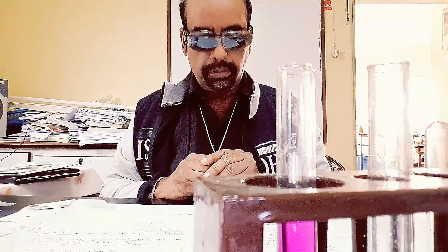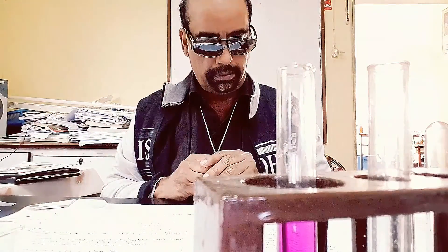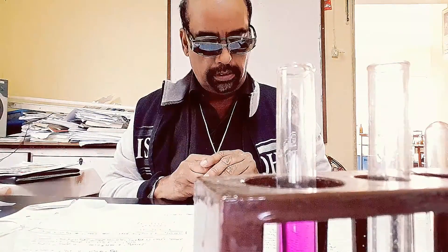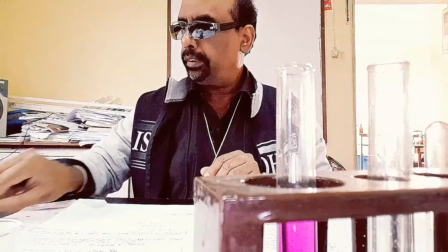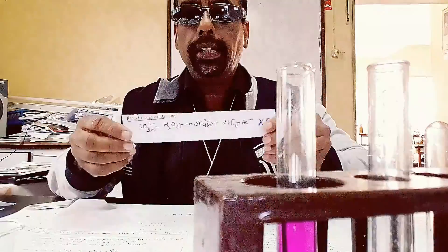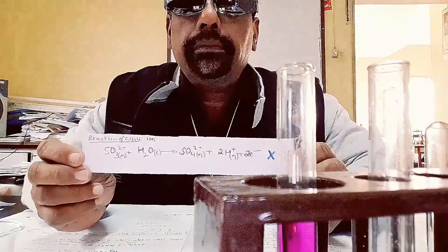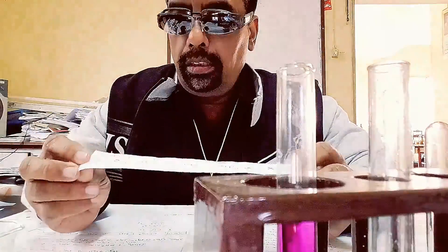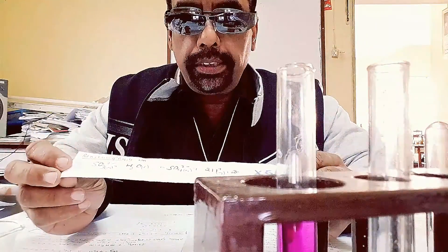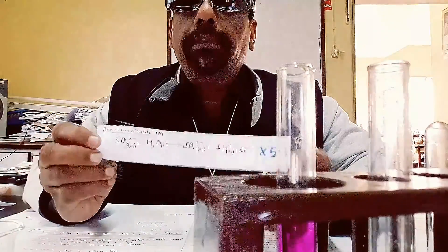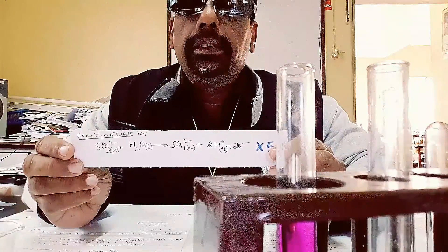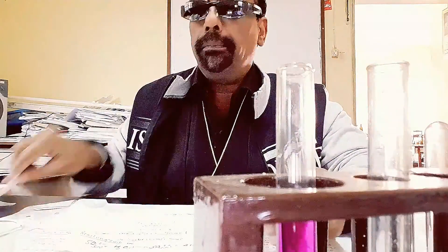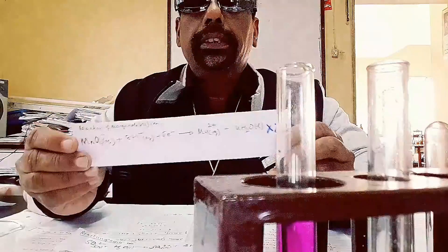The manganate MnO₄⁻ is reduced to Mn²⁺, and the sulfite is oxidized to sulfate. Sulfur dioxide is also oxidized to sulfate. So in this redox reaction, the role of sulfite is as a reducing agent, and the manganate is reduced, converting to Mn²⁺ and accepting electrons.